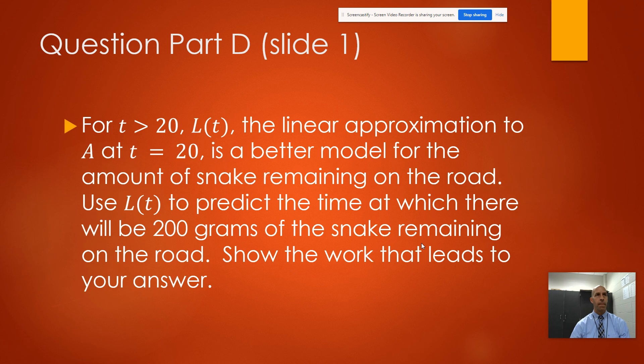Question D, slide one - there's two slides on this one. Here's the question: For t greater than 20, L(t), the linear approximation of A at t equals 20, is a better model for the amount of the snake remaining on the road. Use L(t) to predict the time at which there will be 200 grams of snake remaining on the road. Show the work that leads to this answer.